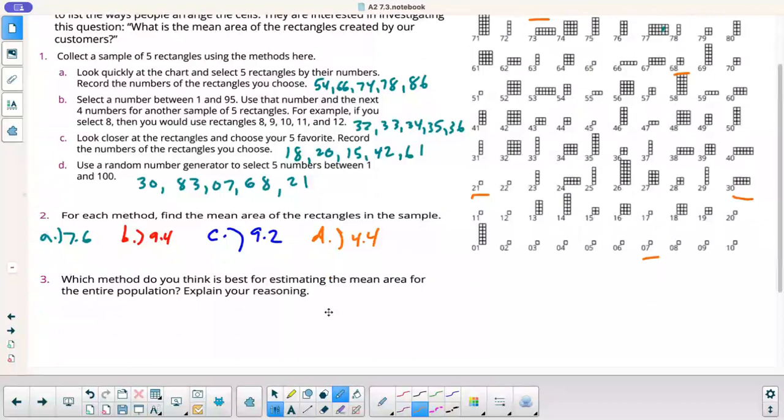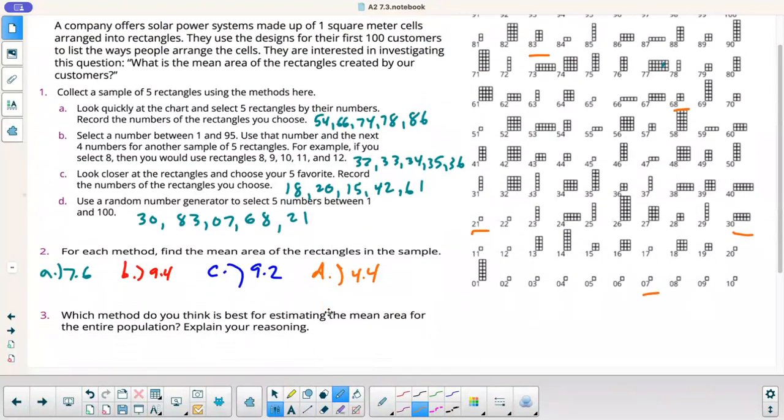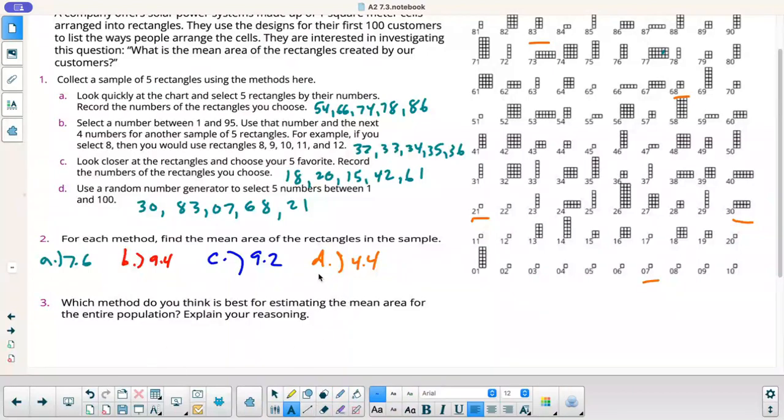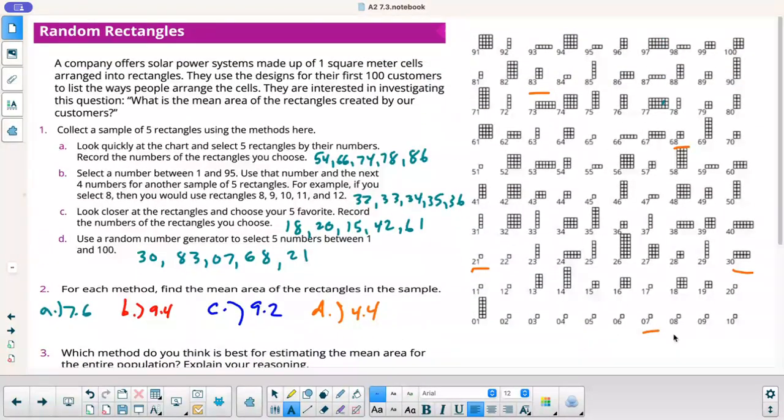Which method do you think is best for estimating the mean area for the entire population? I mean, I don't know what the actual answer is. We'd have to add these all up and divide by 100. But I definitely would say, and my data didn't work out very well because this is like the lowest of them all for my random number, but I would still say D is the best because it is truly random. I guess A, problem with A is if I just look so quickly, when I chose these numbers, I kind of chose them all in the same spot. Whereas, like if you look here, down at the bottom, it's more of the numbers that have 1. And up top, it's kind of like bigger rectangles over here.